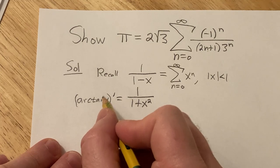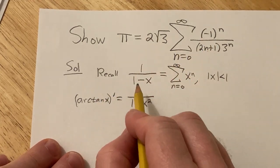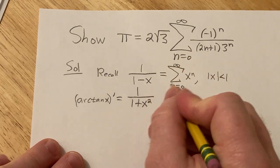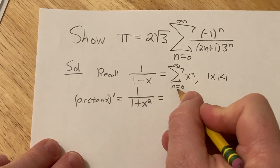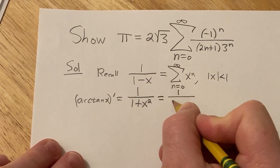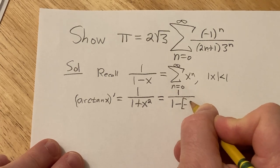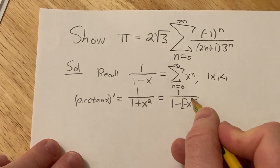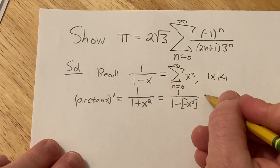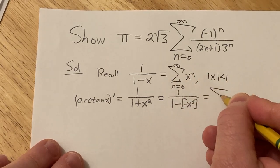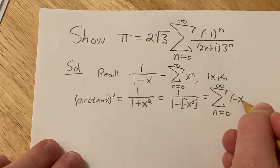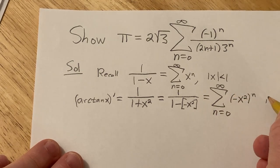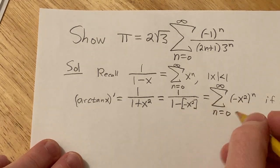Once we have the power series for arc tangent, we can try to come up with this really cool equation for pi. We have 1 over (1 minus x), and we can rewrite this to make it fit the form: 1 over (1 minus negative x squared). Now this whole thing — negative x squared — is your x, and you can apply the formula. This is equal to the infinite sum as n runs from 0 to infinity of negative x squared to the n, valid if the absolute value of negative x squared is less than 1.